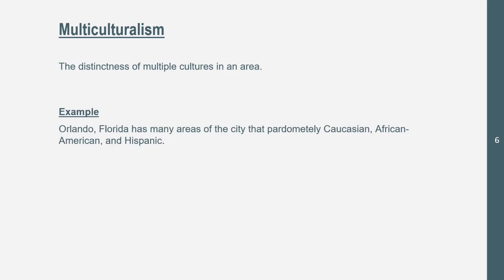An example would be in Orlando, Florida, which has many areas of the city that are predominantly Caucasian, African-American, and Hispanic. You can drive around Orlando and find ethnic neighborhoods — primarily Caucasian areas or primarily Hispanic areas. Hispanic areas would be around Kissimmee, Caucasian areas around Buena Vista and the Disney parks, and African-American areas probably downtown. That's an example of multiculturalism.